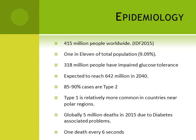About 318 million people had impaired glucose tolerance — not diabetic by definition but not normal either, with post-prandial levels above 140 but not beyond 200, or fasting levels above 100 but less than 126. This number is expected to reach 642 million by 2040. Among all diabetic patients, about 85 to 90 percent of cases are type 2 diabetes. Type 1 is relatively more common in countries near the polar region — the Scandinavian countries, Canada, and northern nations.